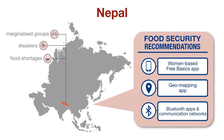The population would provide data that the mVAM team needs to assess food insecurity in the region, and in return the population would be able to use Wi-Fi and phones to contact loved ones. In Nepal, we focused largely on women and the geographical needs of food production and distribution. We looked at a women-based free basics app which allows for information sharing, provides a support network, and acts as a platform for women's voices. We also developed a geo-mapping app for quick responses in emergencies and long-term data collection by mapping food production and shortages — information shareable with local farmers, markets, the government, and the World Food Programme.